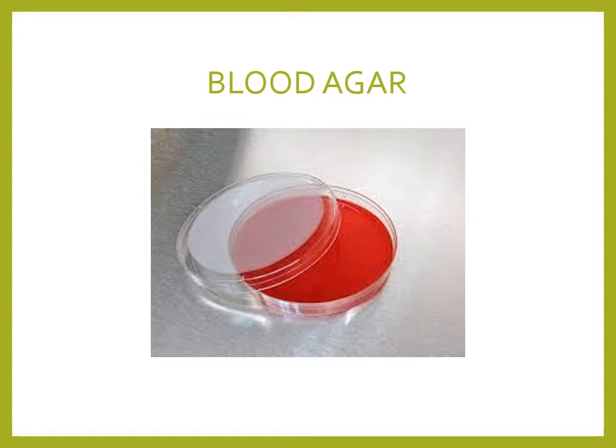The uses of blood agar: first, it supports the growth of fastidious organisms such as Streptococcus and Haemophilus. Note that Staphylococcus is not a fastidious organism — it can grow on nutrient agar. Staphylococcus is relevant when checking hemolytic properties. Hemolysis indicates pathogenicity — if a bacterium shows hemolysis, it is likely pathogenic. The second use is to check hemolytic properties.